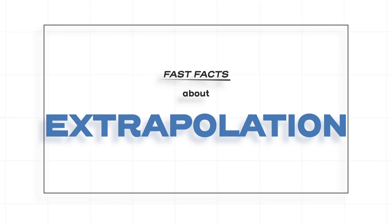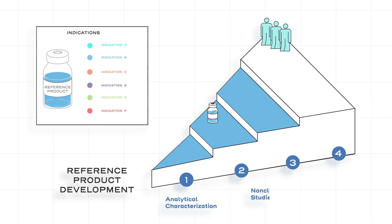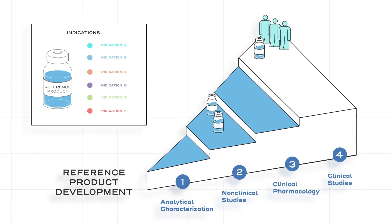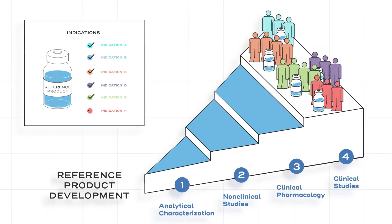Fast facts about extrapolation. Originator biologics must demonstrate safety and effectiveness in clinical trials to gain approval for each clinical use or indication sought.